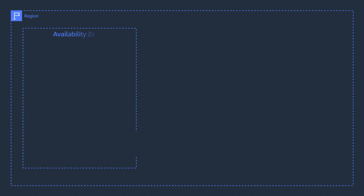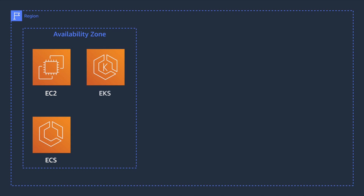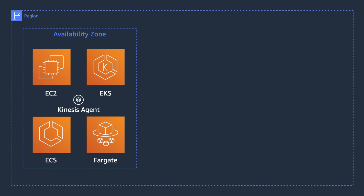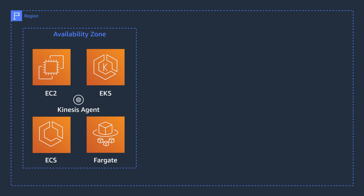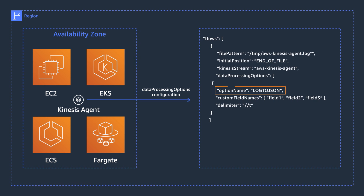The first step is to identify all the services you want to collect information from. This could be applications running on Amazon EC2, ECS, EKS, or AWS Fargate. You can easily pull logs directly from these services using the Kinesis agent. Ultimately, you want the logs to be in JSON format for indexing in OpenSearch. You can use the Kinesis agent to convert the logs to JSON by adding the data processing options configuration setting and specify the log to JSON processing option.